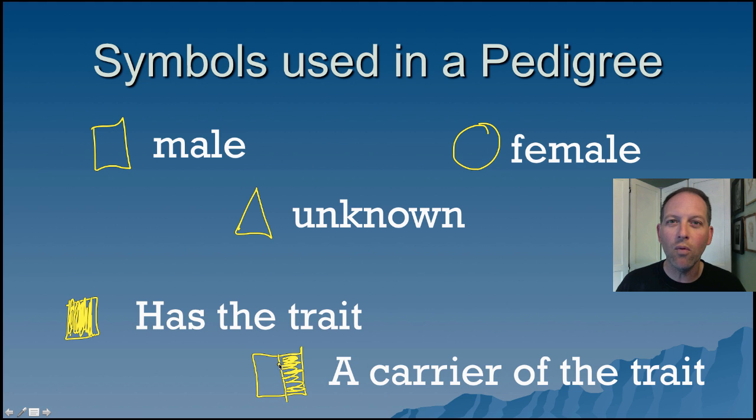So, for example, my wife carries the trait for color blindness. Now, she's not color blind, but she is a known carrier for it.